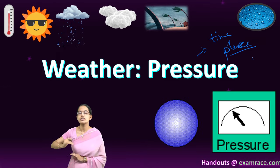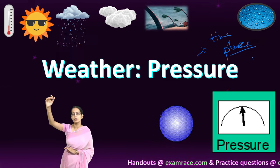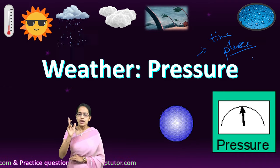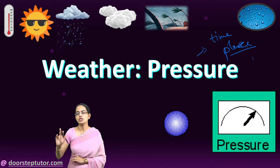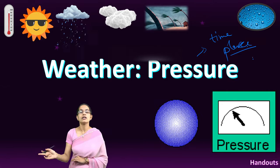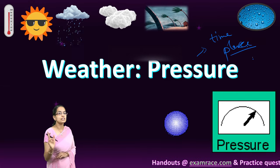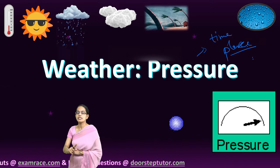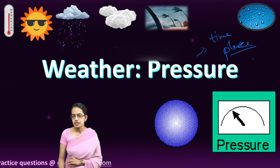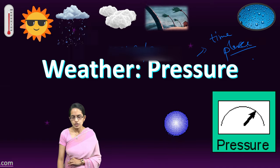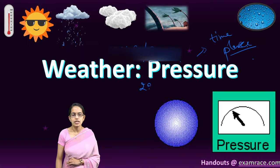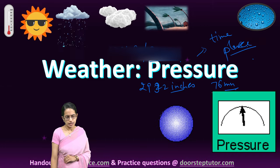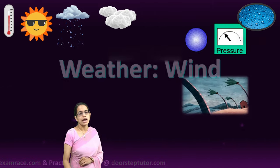At the top of a mountain, atmospheric pressure would be very low compared to the foot of the mountain. Atmospheric pressure is also inversely proportional to temperature — higher temperature means lower pressure, and lower temperature means higher atmospheric pressure. Pressure is measured through a barometer, while temperature is measured through a thermometer. Standard weather pressure is 1034 grams per square centimeter, usually given as 29.92 inches or 76 mm of mercury column.